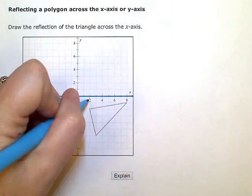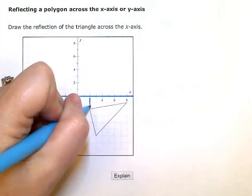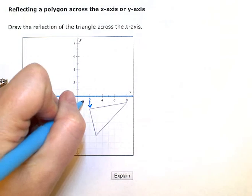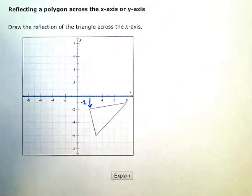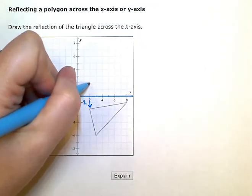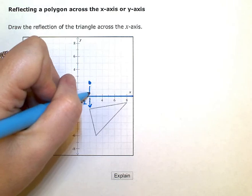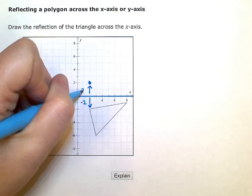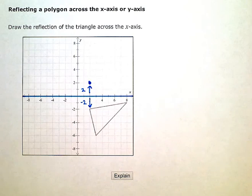So this point right here, right now is two units below the axis. So I'm going to plot a new point right here that's two units up from the axis.